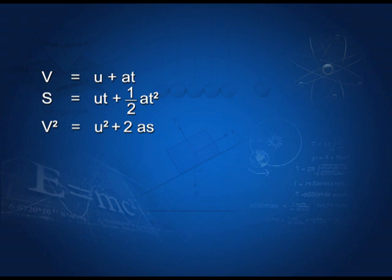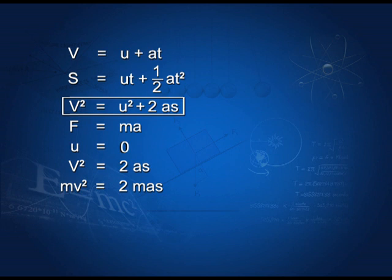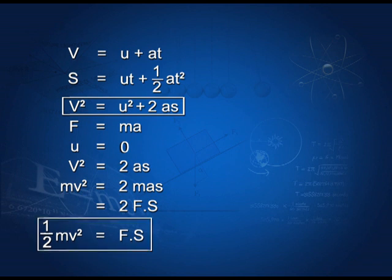Now let us see how this gives us the value for work done. If force F is applied on a body of mass m, an acceleration a is produced. Looking at the equation v² = u² + 2as, if our body starts from rest, u equals 0, so v² = 2as. Multiplying both sides by m to get the ma factor, we recognize the force, so this becomes mv² = 2Fs. Taking 2 to the other side gives us ½mv² = F·s. This result becomes exceptionally important.